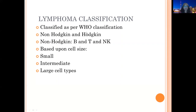Lymphoma classification is based upon the WHO classification. The broad categories are non-Hodgkin lymphoma and Hodgkin lymphoma. Under non-Hodgkin lymphoma, they are either B, T, or NK cell lymphomas. Lymphomas are further categorized based upon cell size — whether they are small, intermediate, or large cell type.